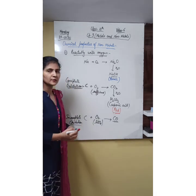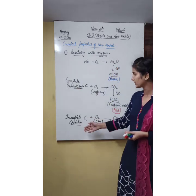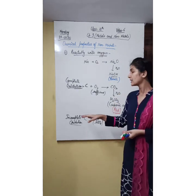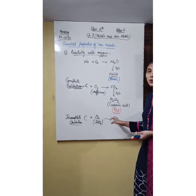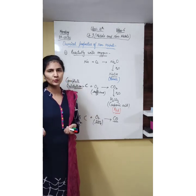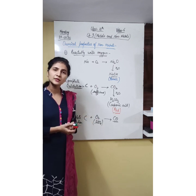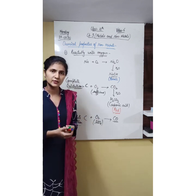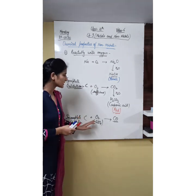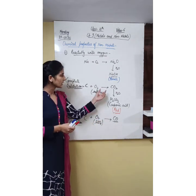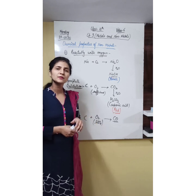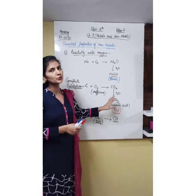So in the case of carbon, two types of oxidation reactions can take place: complete oxidation and incomplete oxidation. In complete oxidation, the product is always carbon dioxide. In incomplete oxidation, the product is always carbon monoxide. The nature of these oxides is acidic, which we can determine using litmus paper — it will change from blue to red in colour.